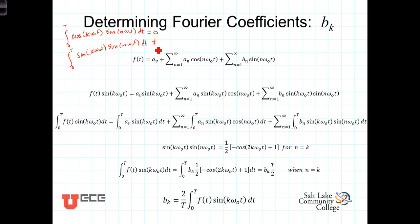But it's important that the product of sine times sine, when k equals n, in other words, we're going to get sine of k omega-0 t times the sine of k omega-0 t, that's the sine squared of k omega-0 t. That integral does not equal 0. We'll be using that.